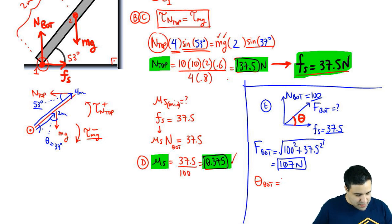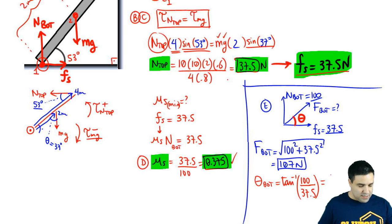Remember, this is just vector stuff. It's the arctangent of the Y force divided by the X force. The Y force is 100. The X force is 37.5. And if you do the arctangent of this, you get 69 degrees. Which means 69 degrees is right here.